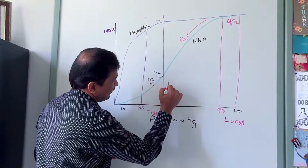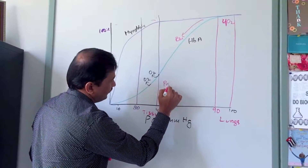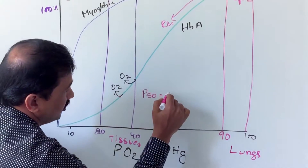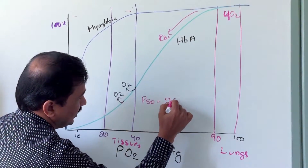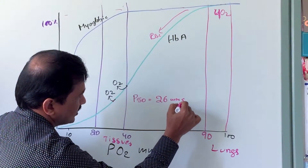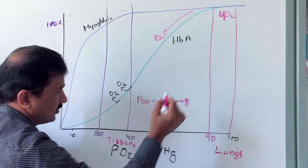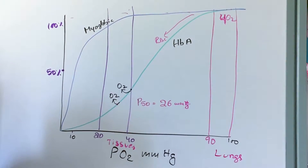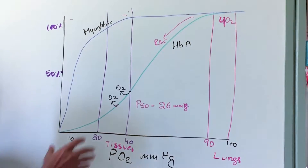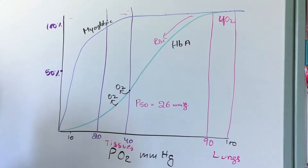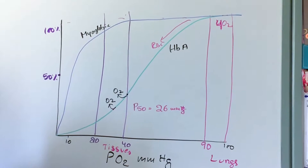This is what is referred to as P50. The P50 for adult hemoglobin is 26 millimeters of Hg — meaning at 26 mmHg, only two molecules of oxygen are released from hemoglobin.